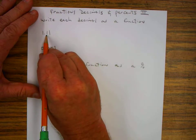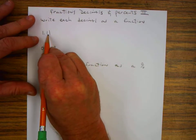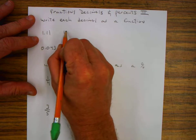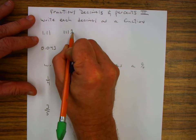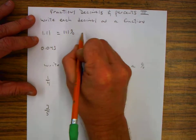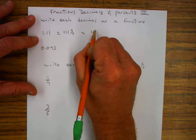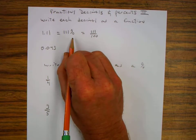Well, I have 1.11. I can move this over tenths, hundredths, and this becomes 111%. I can also write it as a fraction as 111 over 100 because it's percents out of 100.